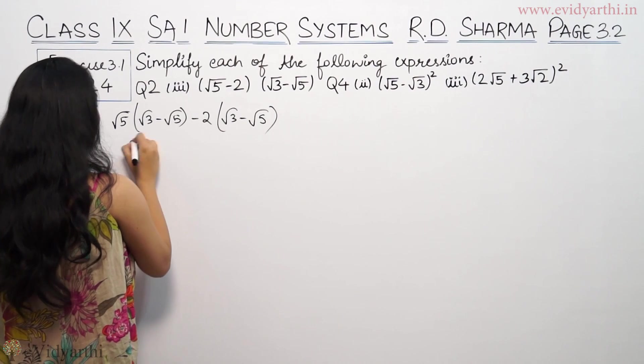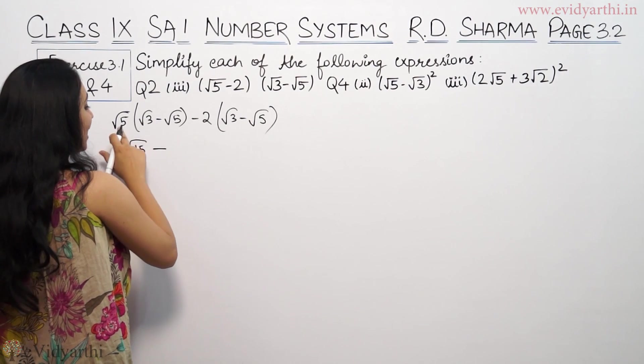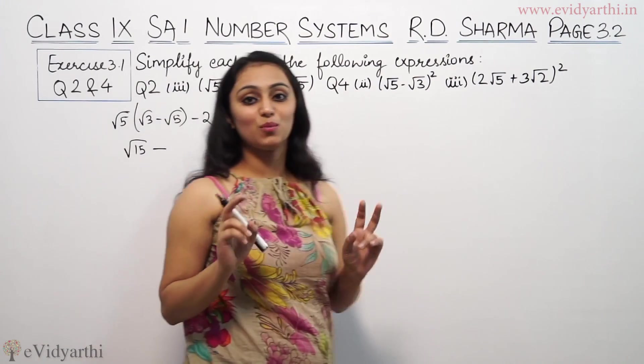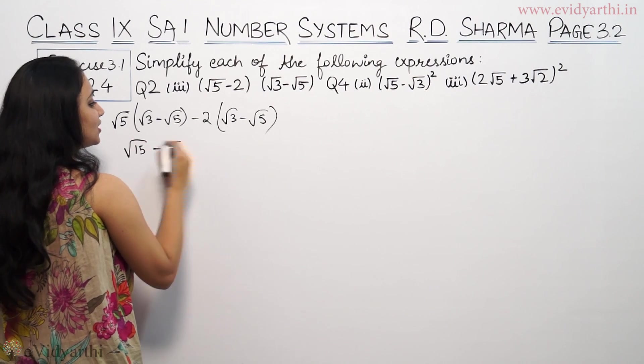So √5 into √3 will be √15, 5 times 3 is 15. This is negative sign. √5 into √5, when same numbers are under root, the root cancels and it becomes a whole number. This will be 5.